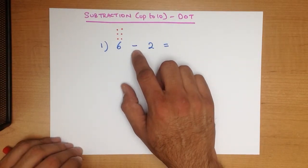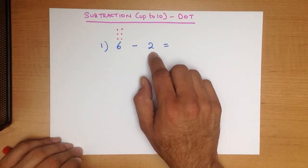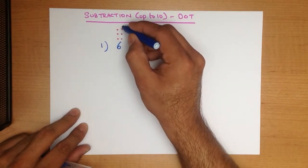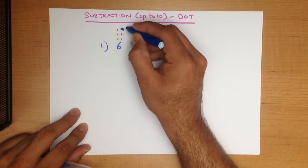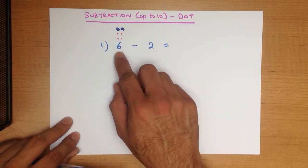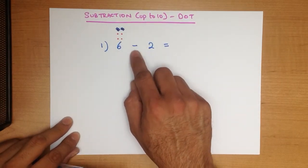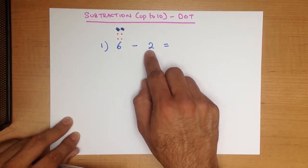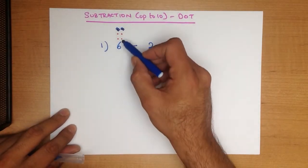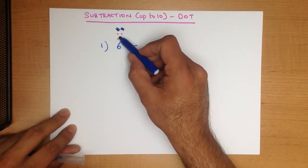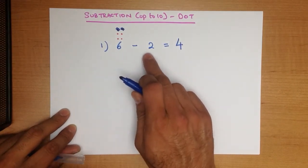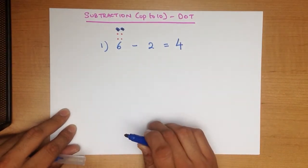We are now taking away 2. So what we do is we cross out 2 of the dots. And it can be any 2 dots. I'm just going to cross this one and this one. So 6 minus 2, for 6 we put in 6 dots. Because it's minus, we cross out 2 dots. So how many dots do we have left? We have 1, 2, 3, 4. And that's our answer. 6 minus 2 equals 4. Nice and easy.